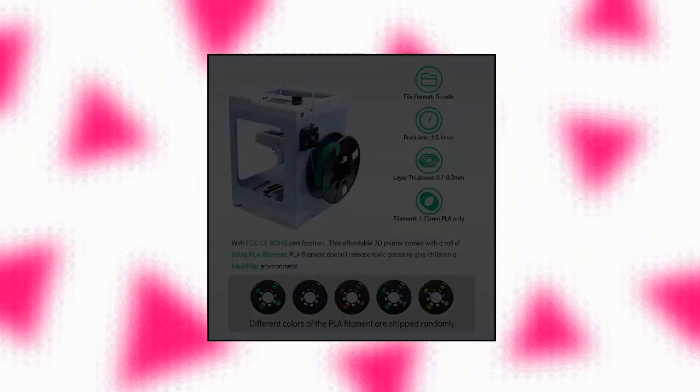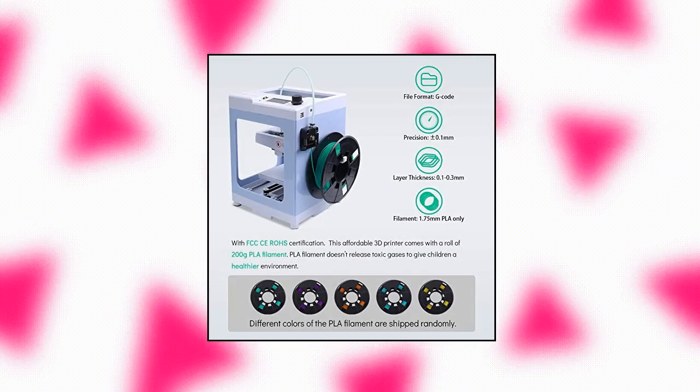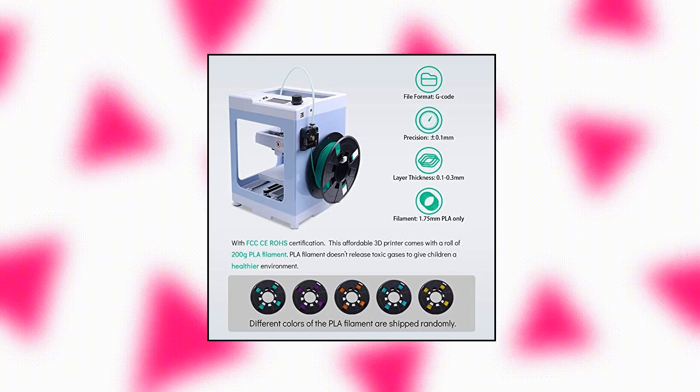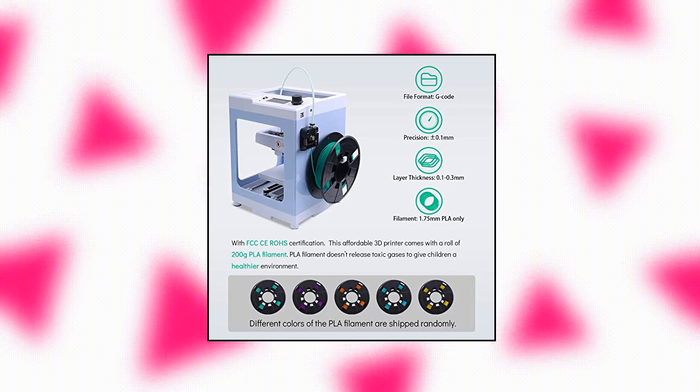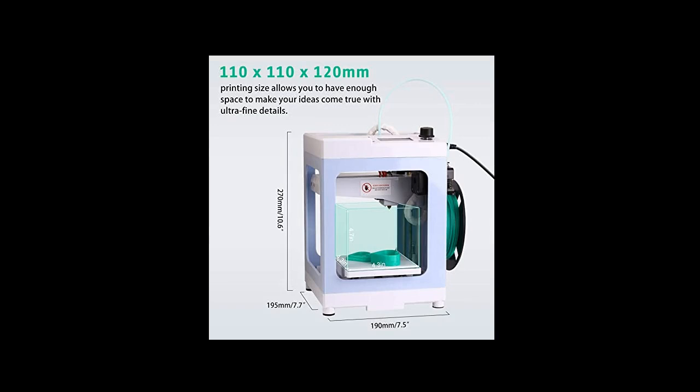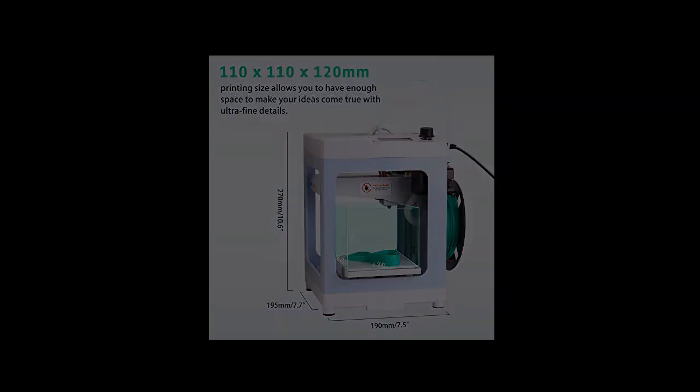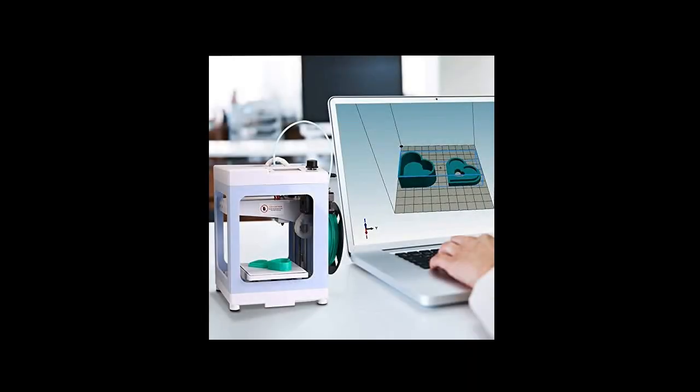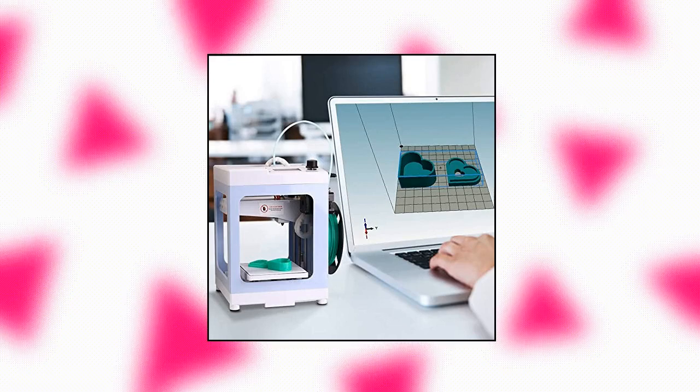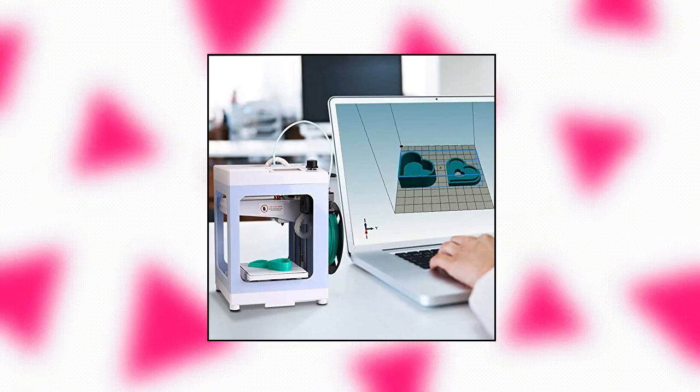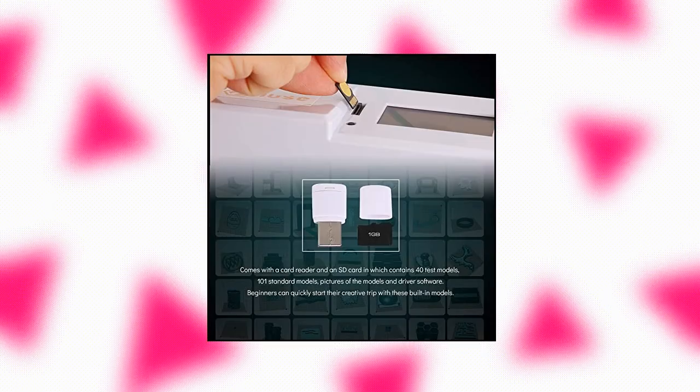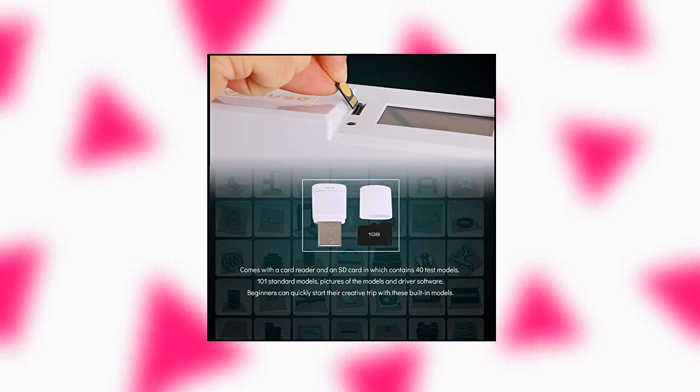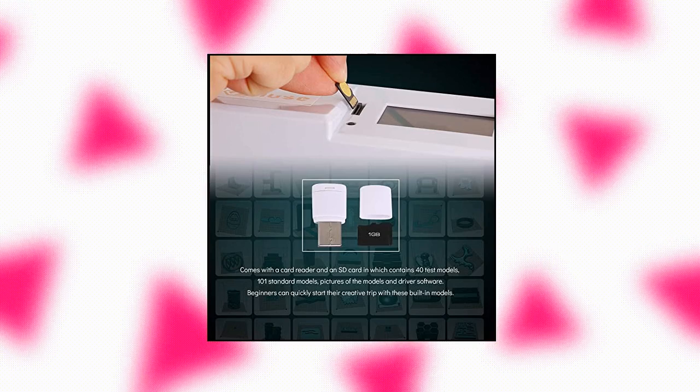Compact body design. This 3D printer is compact enough for office, classroom, or studio desk. 19.5x19x27cm body won't take up much space on your workbench and easy to carry. Print your idea as soon as you feel inspired, safe and secure. With FCC CE RoHS Certification, this affordable 3D printer comes with a roll of 200g PLA filament. PLA filament doesn't release toxic gases to give children a healthier environment.